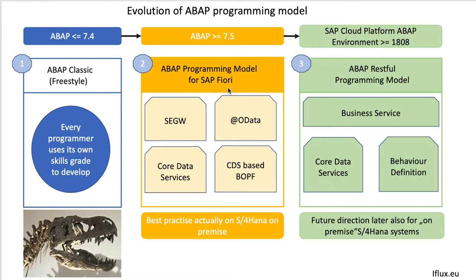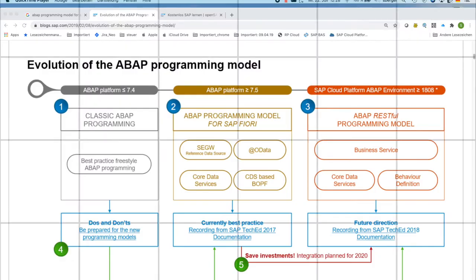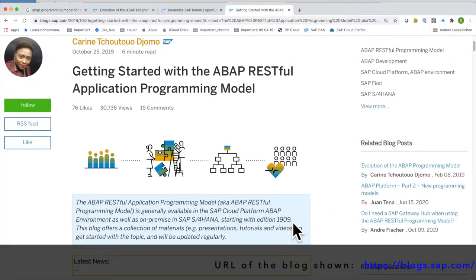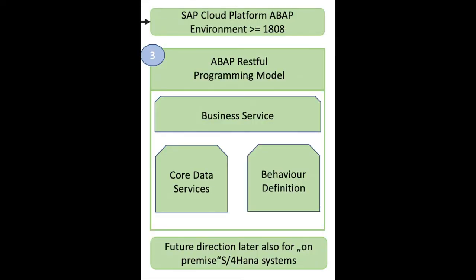On the next column, item number three, this is the ABAP RESTful programming model, where we also have Core Data Services, we have behaviors, and we have services — and we will see on another slide what it is all about. This new programming model is available on-premise with the 1909 edition. Be aware that item number three is the future programming model, meaning developers have to deal with this topic within the next few years, so it's a good idea to understand what it is all about and how to develop with this new ABAP RESTful programming model.